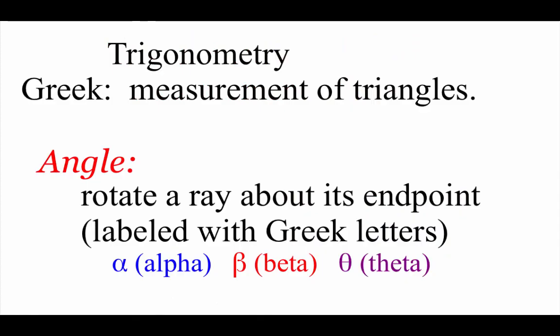Trigonometry means that we're going to be studying the measurement of triangles and some different relationships that happen within those triangles, dealing with the angles and the sides. We're going to focus on the angles first as we start to build what we know about trigonometry and eventually move into some different trigonometric functions. The definition of an angle is when we take a ray — a line that extends out in one direction infinitely — and we rotate that ray around its endpoint.